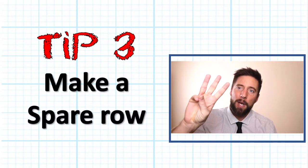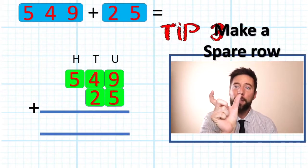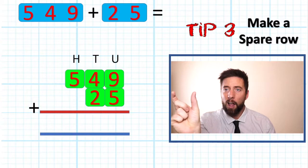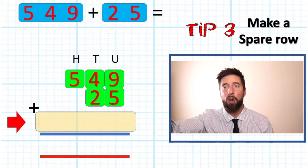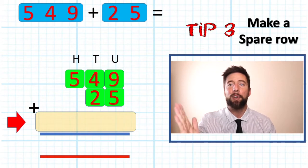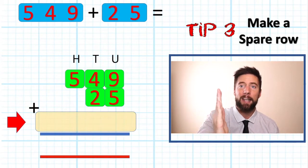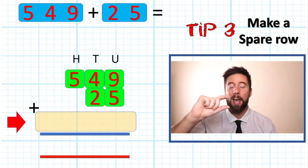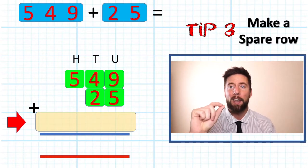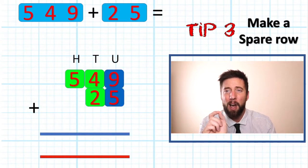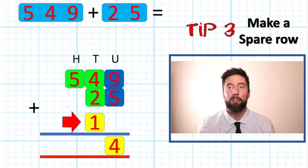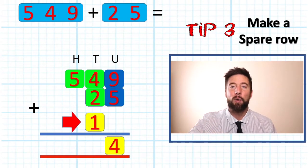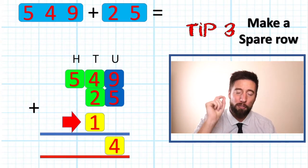Tip number three, my personal favorite. We're going to bring this bar, this little line, we're going to bring it down. Okay, that now creates a spare row for anything we are bridging. If we are now regrouping into the next column, we have got a proper row to put that number. Not just squeezing it above the line, we have got its own actual row. Therefore, it will look neat, it will look like a number and you will not forget it.